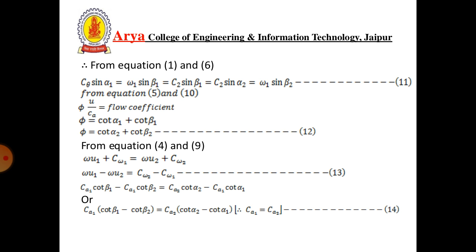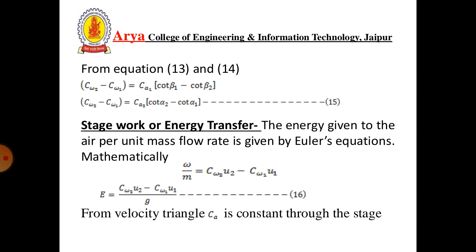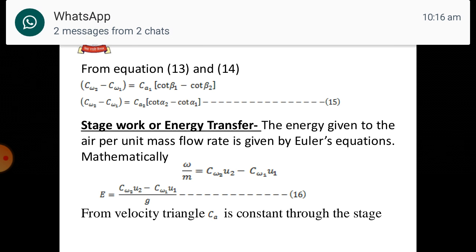From equations 1 and 6: Ca sin α1 = W1 sin β1 = C2 sin α2 = W2 sin β2. From equations 5 and 10, the flow coefficient φ = U/Ca = cot α1 + cot β1 = cot α2 + cot β2. From equations 9 and 10: Cw1 + W1 = Cw2 + W2, giving Ca(cot β1 − cot β2) = Ca(cot α2 − cot α1).